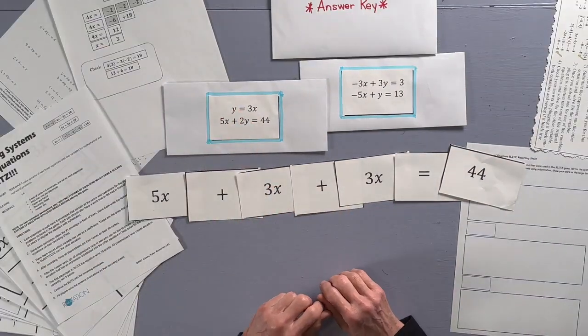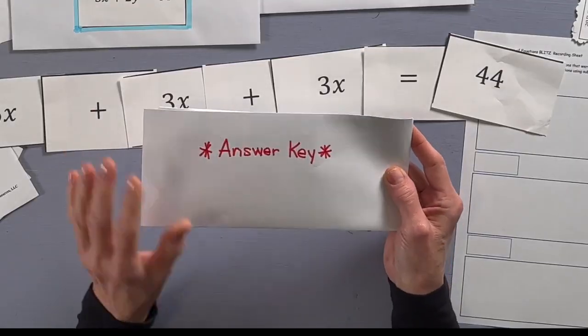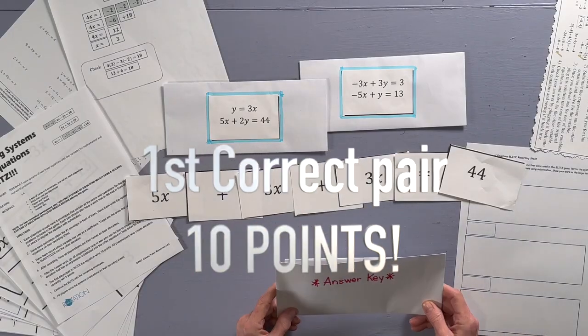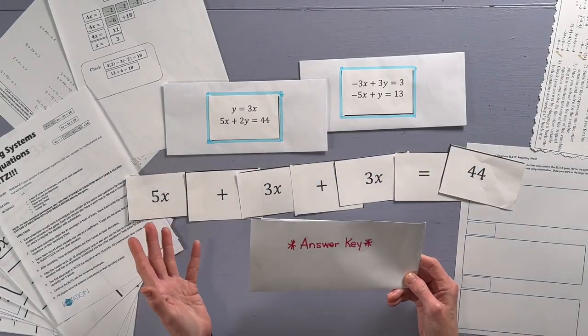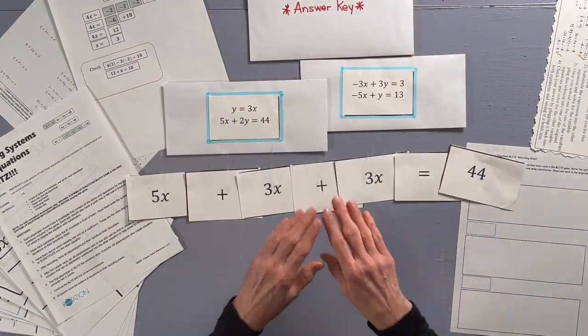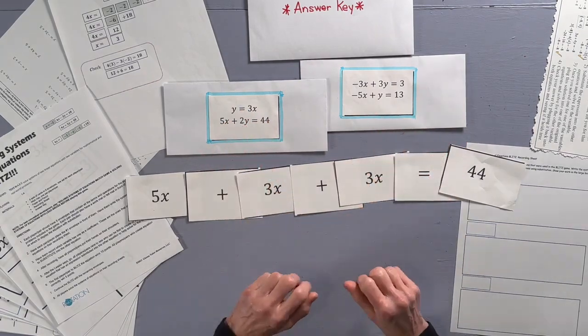The leader glances at the answer key to confirm who is the winner. The first player or pair to stand and have the correct organization wins 10 points. Any other player or pair who organized the equation correctly wins 5 points and play continues until all of the cards and envelopes have been used.